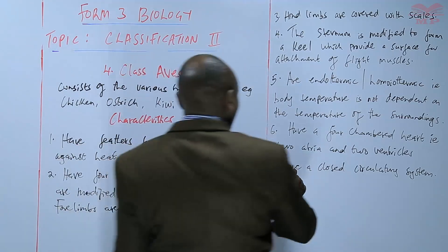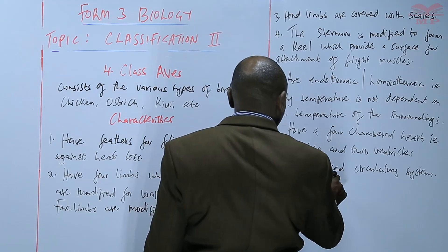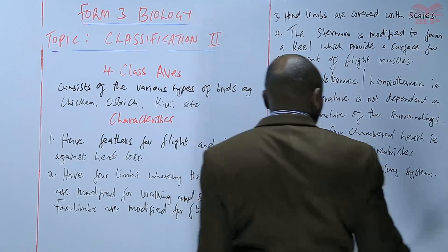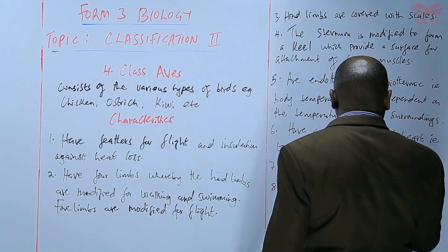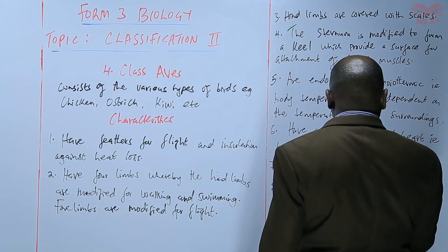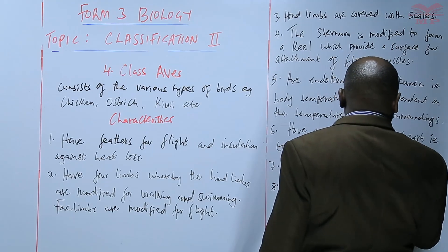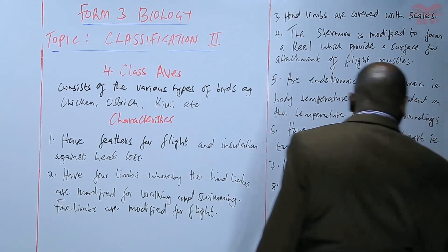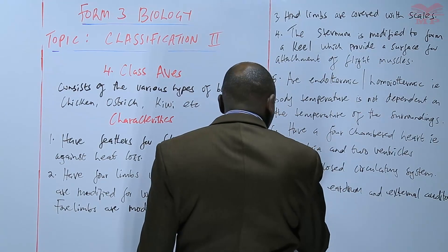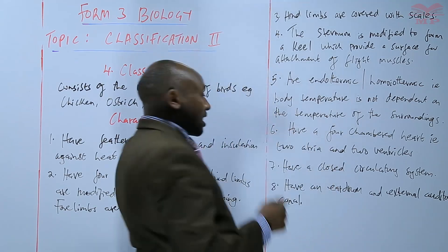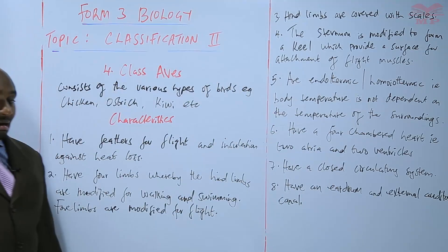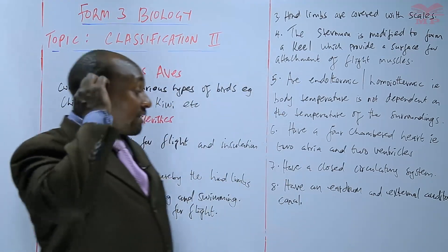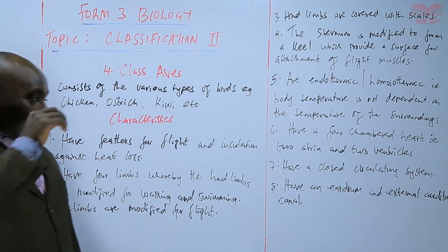Birds also have an eardrum and an external auditory canal. However, they don't have the external ear, or they don't have the pinna.